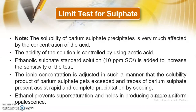Now we will note some precautions and understand why different reagents are used. The solubility of barium sulphate precipitate is largely affected by the concentration of the acid. If the concentration of acid is different, the solubility of barium sulphate will be different. The acidity of the solution is controlled by acetic acid — its role is to control the acidity so that barium sulphate does not dissolve.